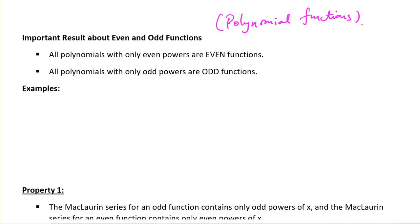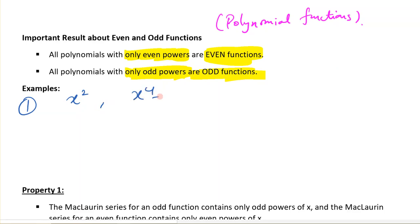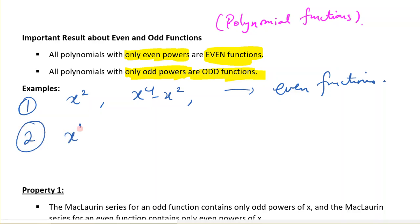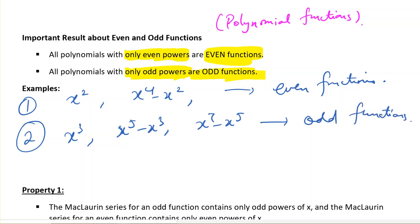If you have polynomial functions, that's actually why even and odd functions get their name. Even polynomials contain only even powers of x, and odd polynomials contain only odd powers of x. So even polynomials are even functions, and polynomials with odd powers are odd functions. Examples: x², x⁴ - x² have only even powers, so those are even functions. x³, x⁵ - x³, x⁷ - x⁵ have only odd powers, so those are odd functions.